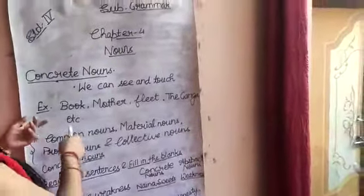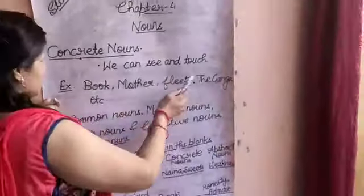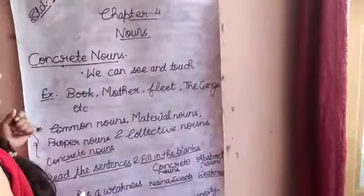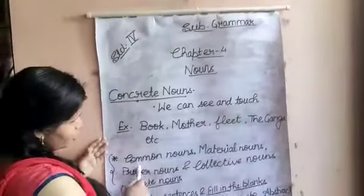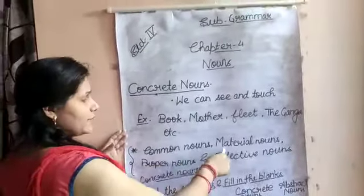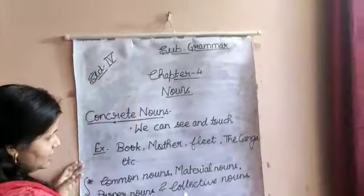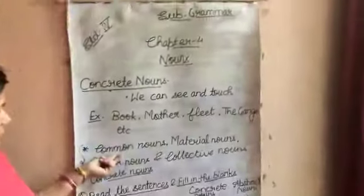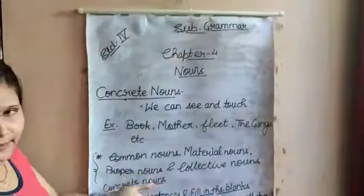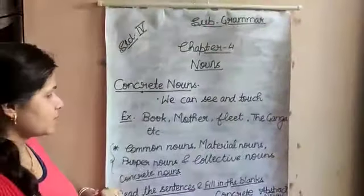In the exam, there is Book, Mother, Fleet, and Ganga. Here is a clue. Common Nouns, Material Nouns, Proper Nouns, and Collective Nouns. This is Nouns.